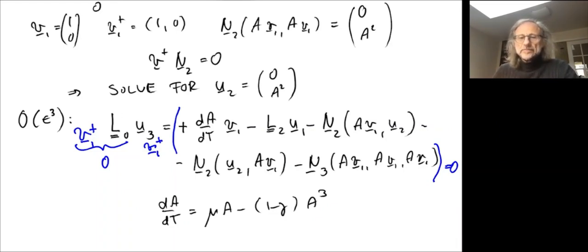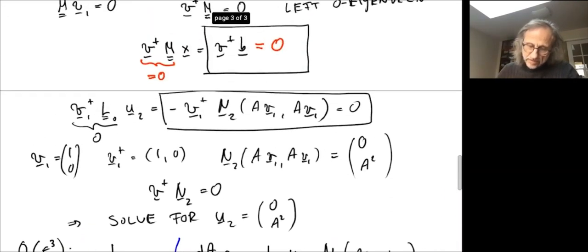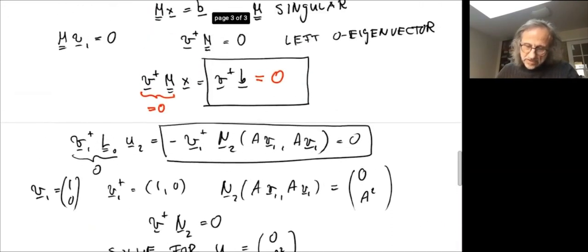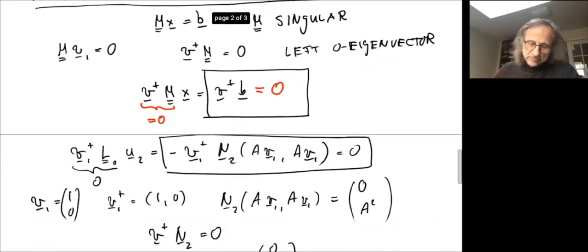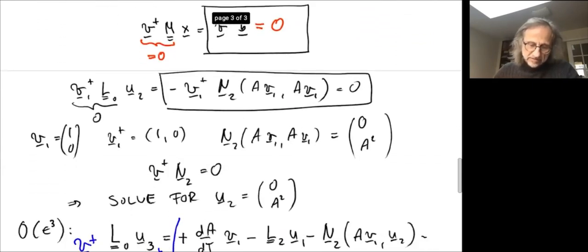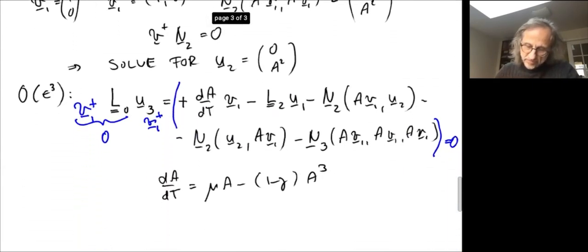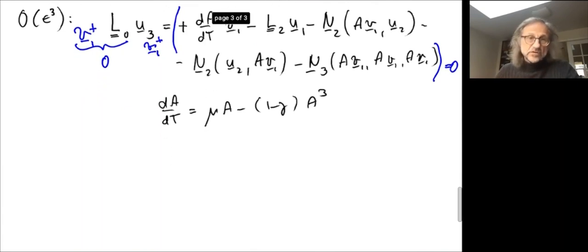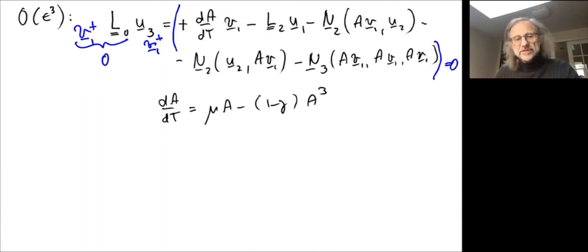So that's the general structure of these bifurcation calculations. In some ways you can just code it up in Mathematica, because it's always going to look the same. That's slightly exaggerated, but there's truth to it.